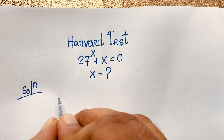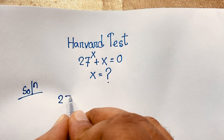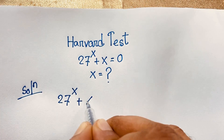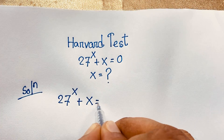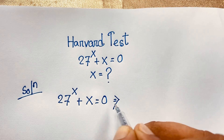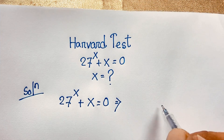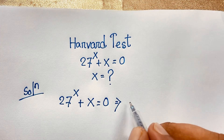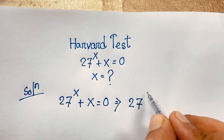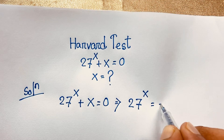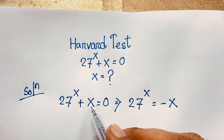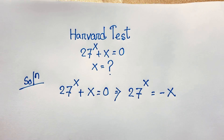Our question is: 27 to the power x plus x is equal to zero. If I move the x to the other side, it will be negative x. So 27 to the power x is equal to negative x.